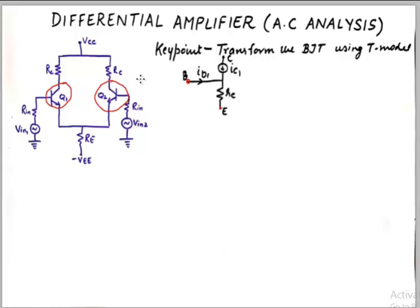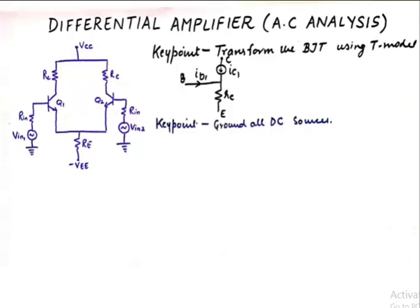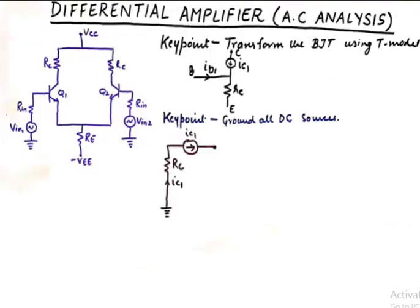And the second key point is that we are going to ground all the DC voltages. So this will be grounded and this will be grounded. So when these two voltages are grounded then what happens? We need to draw the equivalent circuit now.